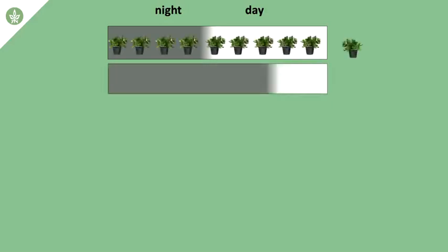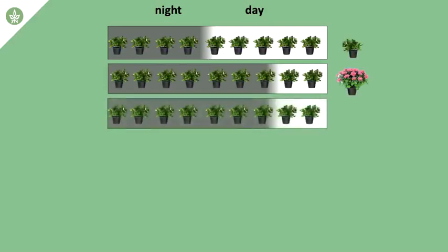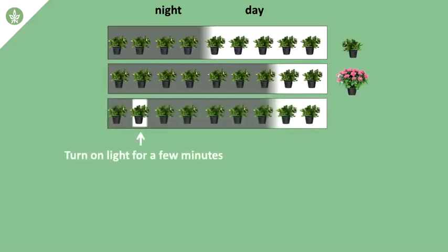So if you take a short day plant, for example, such as chrysanthemum, and put it in conditions where it should flower with a short day, but turn on the lights in the middle of the night, you inhibit the flowering. And it's enough to turn on the lights for just a few minutes.